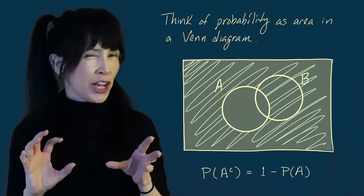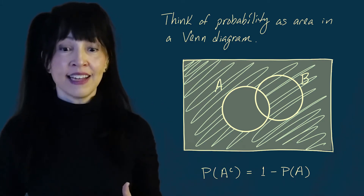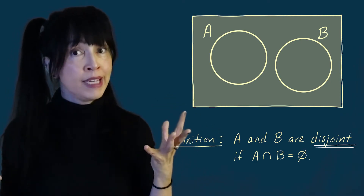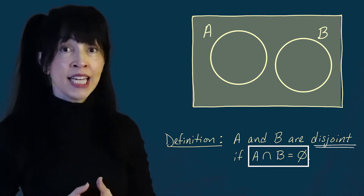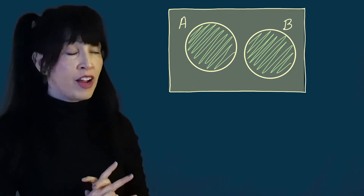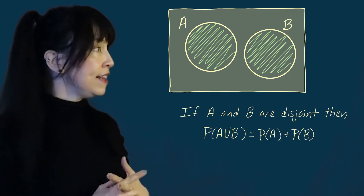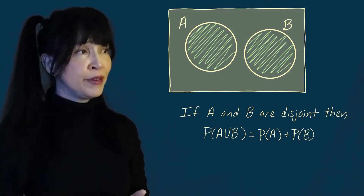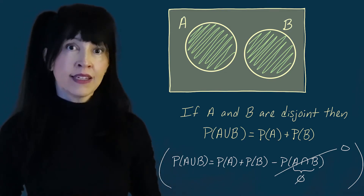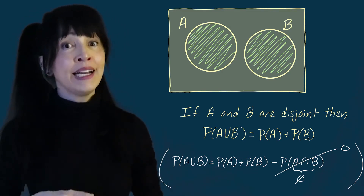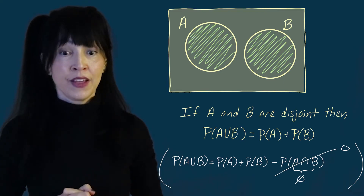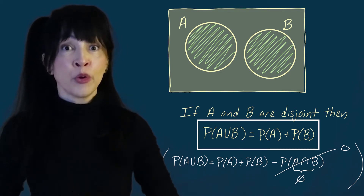When drawing a generic Venn diagram you should give the circles some overlap unless you know specific things. The events A and B are said to be disjoint if they don't overlap, meaning A intersect B is the empty set. If A and B are disjoint, the probability of A union B is just the area of A plus the area of B. This is really just a special case of our earlier rule, since the intersection is the empty set and has probability zero.